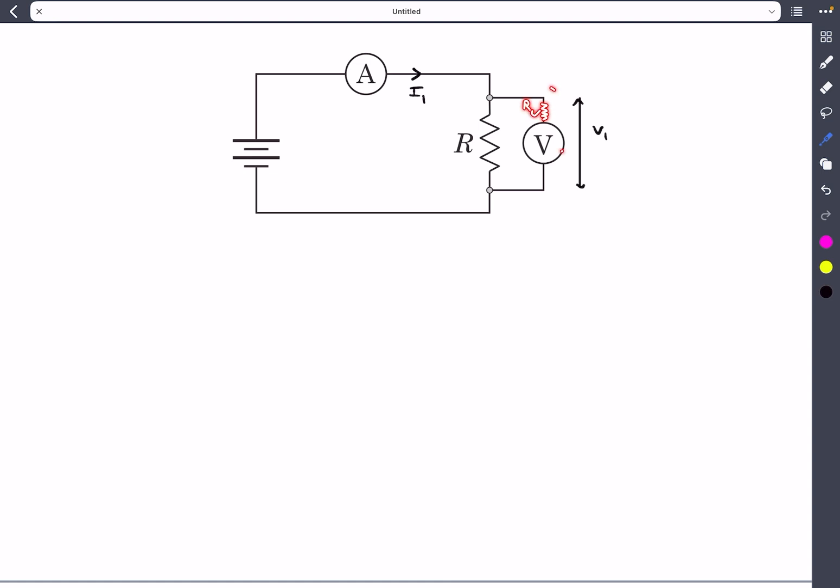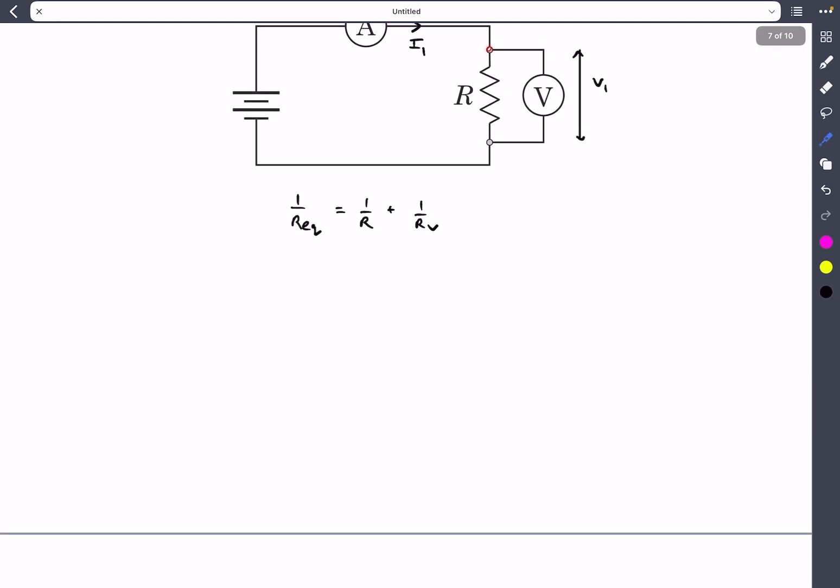Let's consider the resistance of the voltmeter as Rᵥ. Since these two are in parallel, we can say 1/Rₑq = 1/R + 1/Rᵥ. We also know that the potential across these two terminals is V₁.